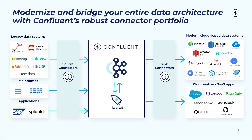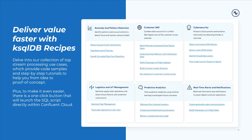Now you have a roadmap for how to modernize your database by bridging your legacy database in any environment to a modern cloud database with Confluent. You don't have to use the same data sources and sinks we used in this demo because we have 120+ pre-built source and sink connectors to meet you wherever your data and applications reside and help you get to production quickly and reliably. You can also check out additional stream processing use cases on the new stream processing use cases recipes page, with step-by-step walkthroughs from categories like anomaly and pattern detection, customer 360, predictive analytics, and more, along with SQL code you can launch in Confluent Cloud with the click of a button.